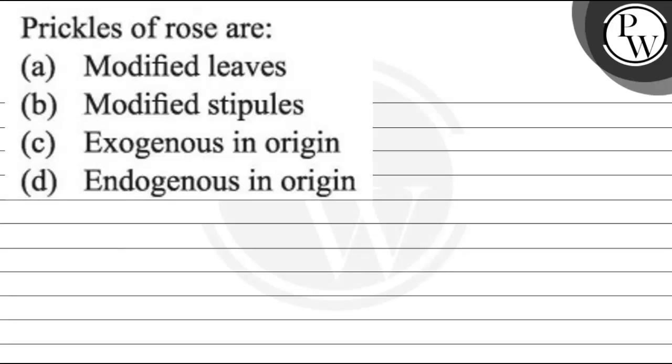Hello, let's read the question. The question says prickles of rose are: First option is modified leaves. Second option is modified stipules. Third option is exogenous in origin. Fourth option is endogenous in origin.